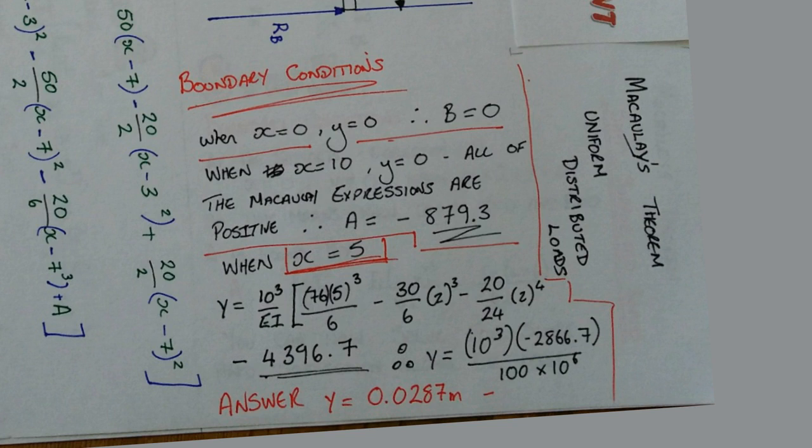Y is equal to 10 to the power of 3 divided by the flexural stiffness. Therefore, 76 times 5 to the power of 3 divided by 6 minus 30 divided by 6, so on and so forth. You get all the way through to the end and then eventually your answer, Y is equal to 0.0287 metres. Change that into millimetres and your deflection will be 28.7 millimetres.